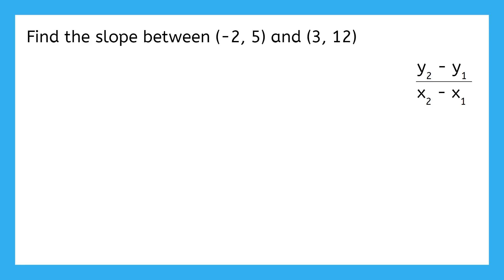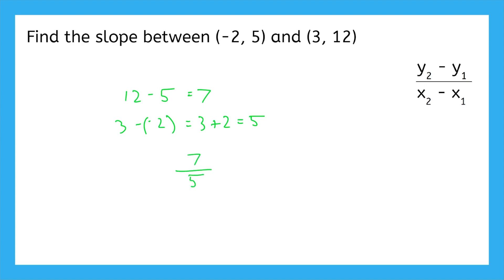Let's do a few more quick examples. From now on, I won't write which value goes with which variable — after some practice, you should be able to recognize them without writing it all out. So you've got y2 minus y1 over x2 minus x1. 12 minus 5 is 7, and 3 minus negative 2 is like saying 3 plus 2, so that's 5. Since this doesn't divide evenly, we can leave it as a fraction: 7 fifths, or 7 over 5.